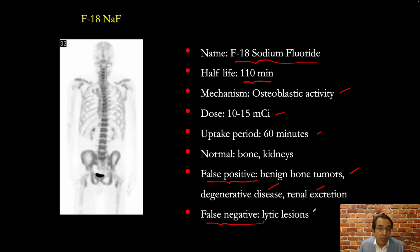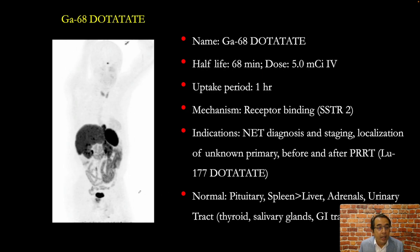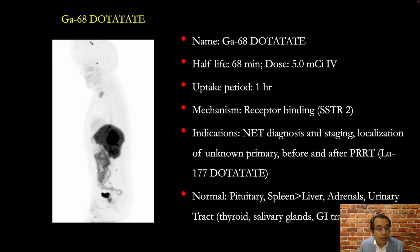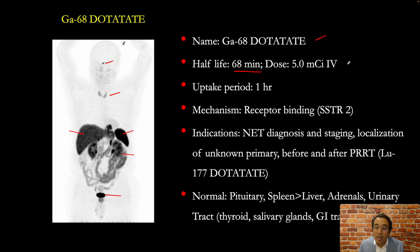This is our next study: gallium-68 dotatate. Looking at physiologic distribution of the tracer in a normal study, we see focal uptake in the pituitary, faint uptake in the thyroid, uptake in the liver and in the spleen — the spleen is normally more intense than the liver — excretion from the kidneys into the bladder, and very variable small and large bowel activity. The radiopharmaceutical is gallium-68 labeled dotatate. Gallium-68 has a half-life of 68 minutes; about five millicuries is injected intravenously and we wait for an hour.